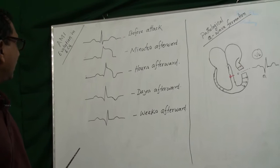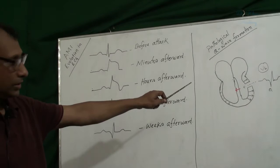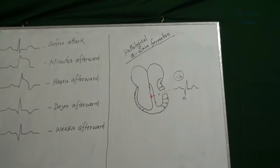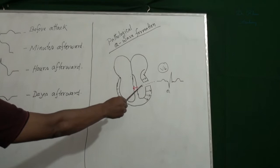How a pathological wave is formed? This figure shows the pathological Q wave formation. Here, when the acute MI occurs in full thickness, that is transmural acute MI.